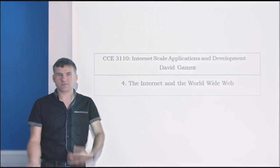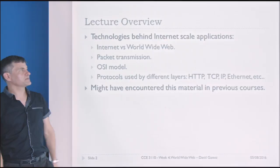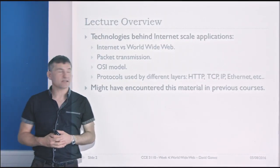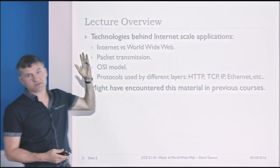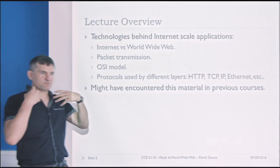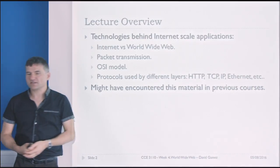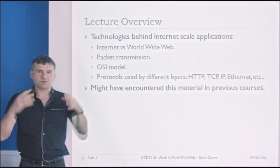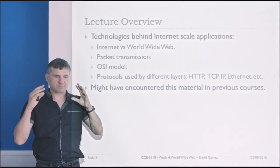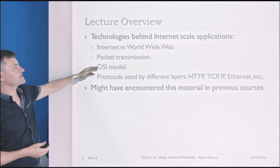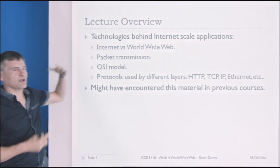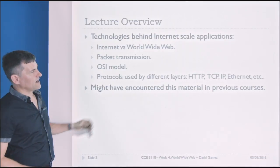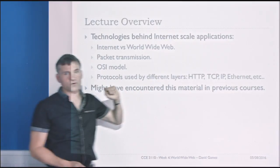In this lecture I'm going to cover the Internet, the World Wide Web, and the difference between them. The aim is to explain that difference, which is often confused, give a brief idea about packet transmission, how we use headers at different layers to send packets to their appropriate destinations. That's the OSI model — a whole stack of different protocols operating in different layers. I'll talk through a few of the more important ones for this course.